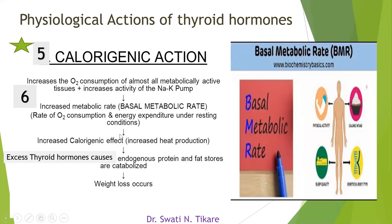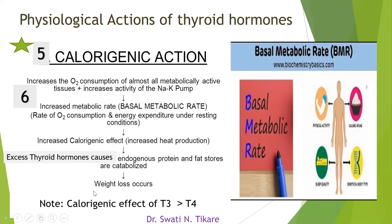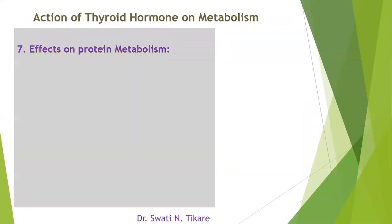Overall, there is increased calorigenic action and increased basal metabolic rate due to thyroid hormones. If there is excess thyroid hormones, it will cause catabolism and there may be weight loss. It is also important to remember that the calorigenic effect of T3 is greater than that of T4, since T3 is more functionally capable than T4.